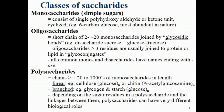These glycoconjugates usually have a role in cell interactions. Regarding the naming of monosaccharides and disaccharides, all of these sugars end with '-ose' — for example, glucose, fructose, ribose, sucrose, lactose, and maltose. Polysaccharides are carbohydrate chains containing greater than 20 monosaccharides and up to 1000 units in length.